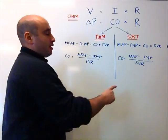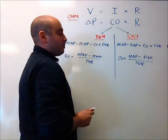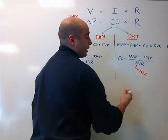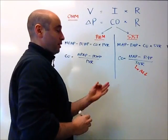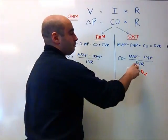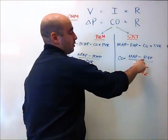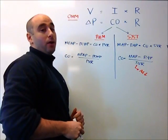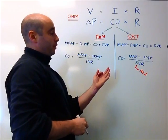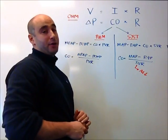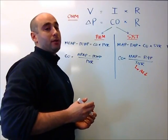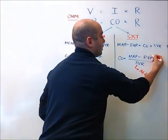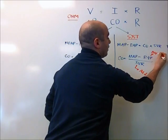On the systemic side of things, in order to make the SVR as small as possible, we can reduce the afterload. And afterload reducers are medications that we commonly use in the CCU, and there's a number of them. In terms of looking at the numerator, when we want to make the right atrial pressure as small as possible, this is the clinical correlate of the CVP. And both reducing the CVP and the right atrial pressure is done by reducing the preload to the right heart, and this is done via diuretics. So this is where our diuretics come into play.